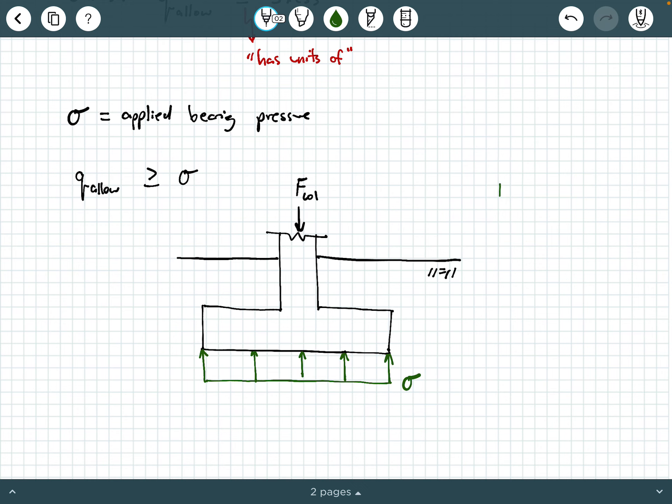So we are going to make some notes here. We're going to say F column is concentric, and that will give us sigma is a uniform bearing pressure that develops at the base of the footing.